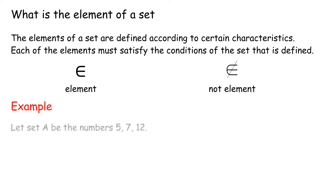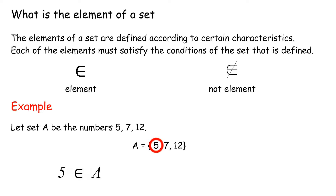Example: let Set A be the numbers {5, 7, 12}. A = {5, 7, 12}. In this example, 5 is an element of A, and 4 is not an element of A.